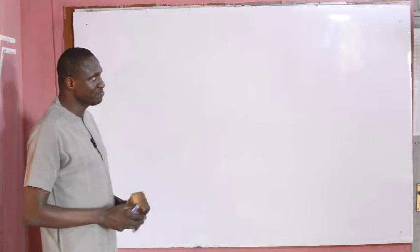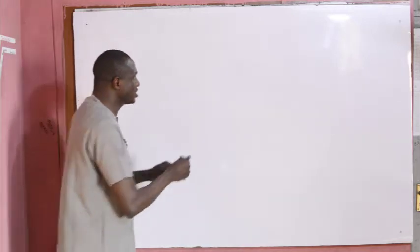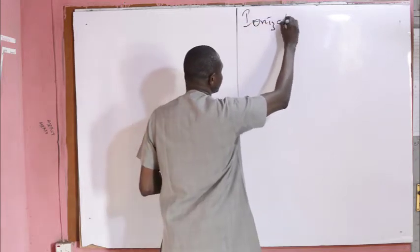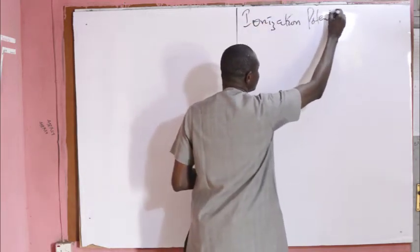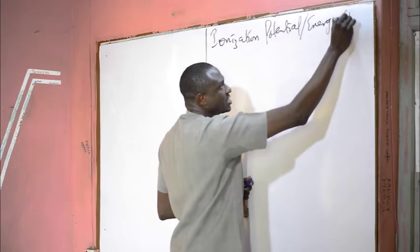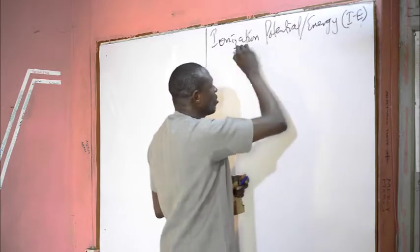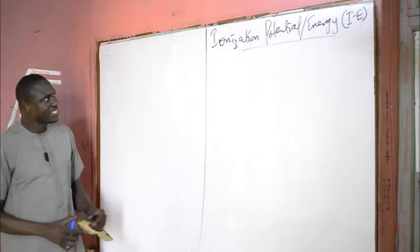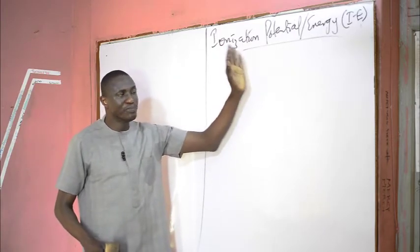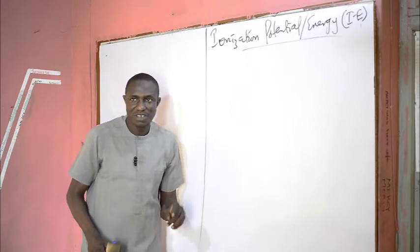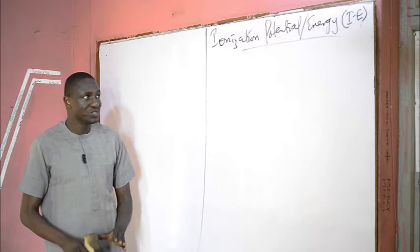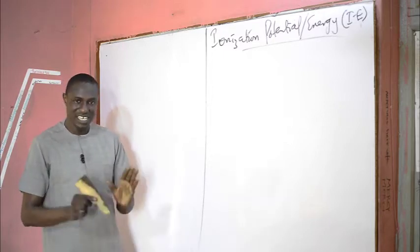So today we are going to look at the first periodic property of elements, which is ionization energy. In some textbooks, you see it as ionization potential, represented as IE. The ionization potential is the minimum energy required to remove the most loosely bound electron from the valence shell of an atom in gaseous state to produce a gaseous positively charged ion.